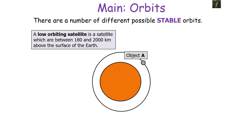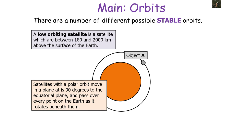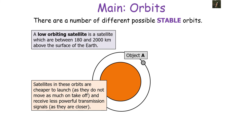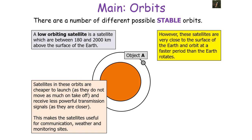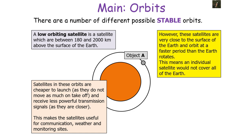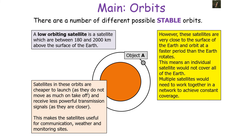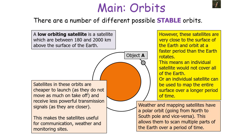Low orbiting satellites are between 180 and 2,000 km above the Earth's surface. Satellites with a polar orbit move in a plane at 90 degrees to the equatorial plane, passing over every point on Earth as it rotates beneath them. These are cheaper to launch and receive less powerful transmissions because they are closer. They are useful for communications, weather monitoring, and mapping. However, because they orbit faster than the Earth rotates, an individual satellite does not cover the whole Earth, so multiple satellites in a network are needed for constant coverage. Weather and mapping satellites use polar orbits to scan multiple parts of the Earth over time.